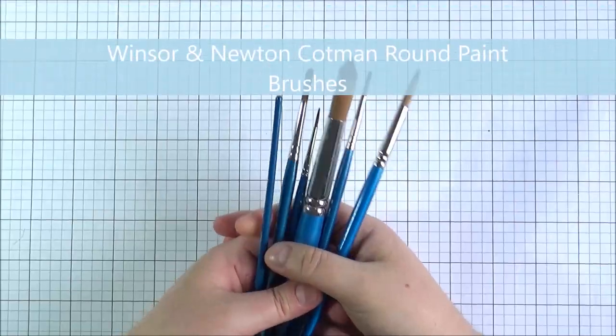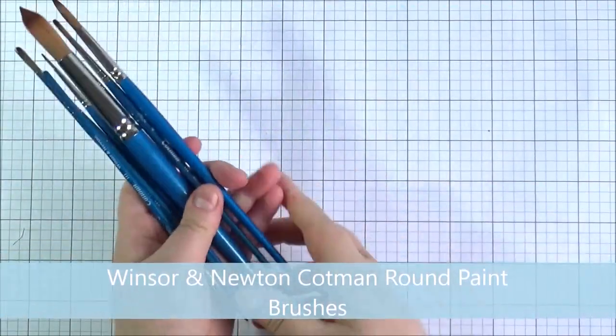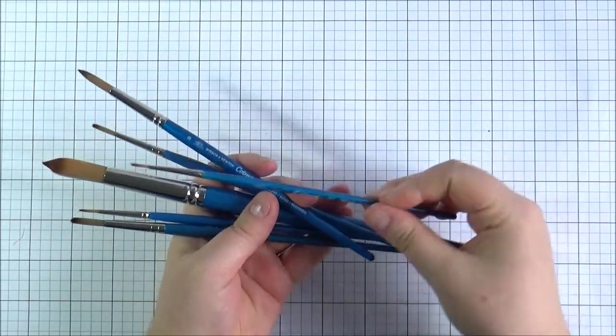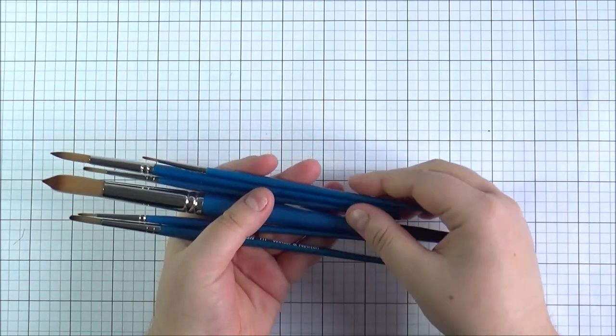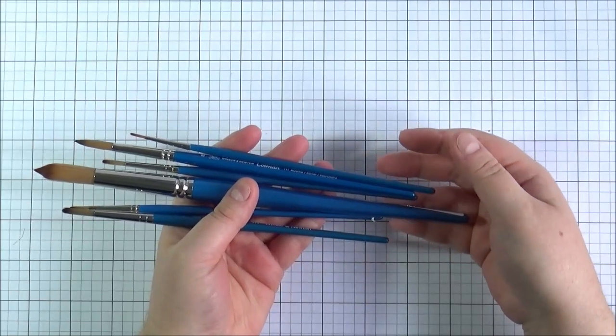Next up is some watercolour brushes and I know this is kind of like a personal preference but I really like the Winsor & Newton Cotman brushes. These are a synthetic brush. It is kind of known in the artist world that real hair is better than synthetic hair for paint brushes because they do tend to hold more water.